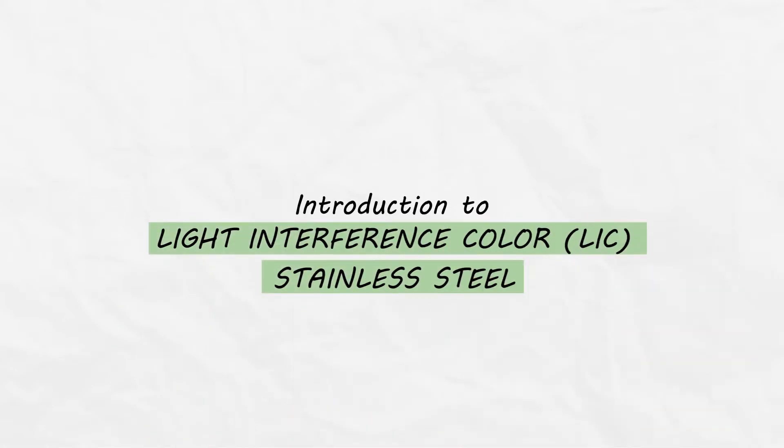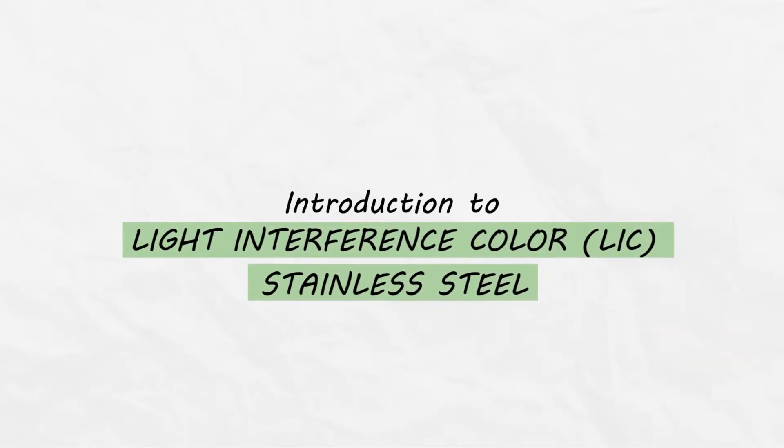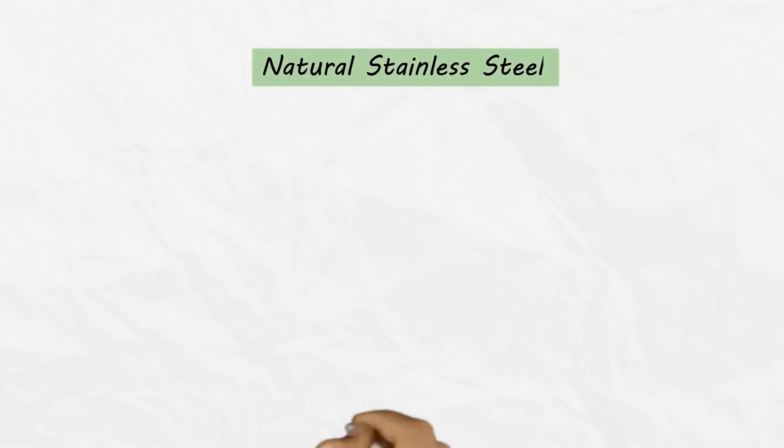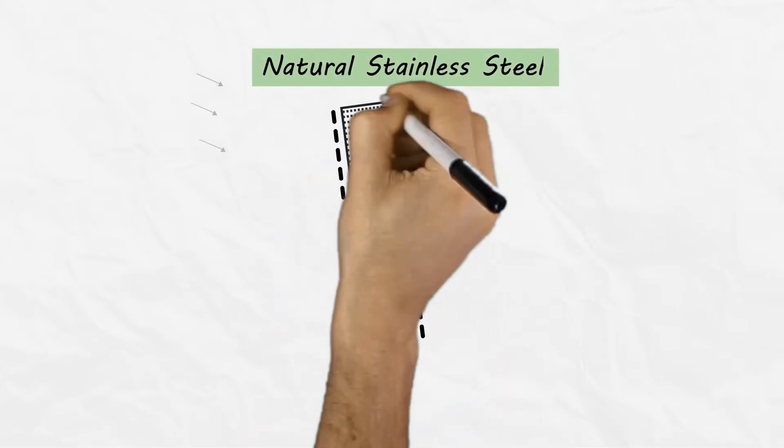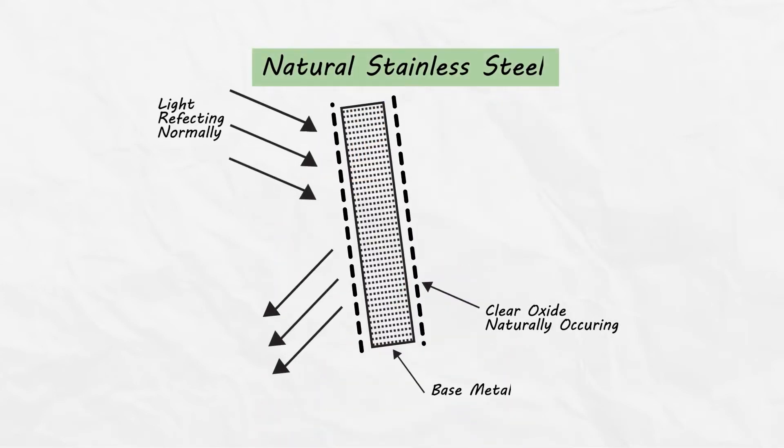Light Interference Color, LIC, of stainless steel is achieved through a unique process which involves the thickening of the existing layer of chrome oxide on the surface of the stainless steel.